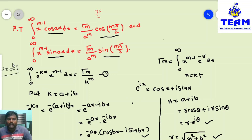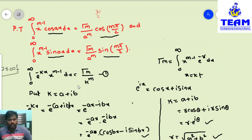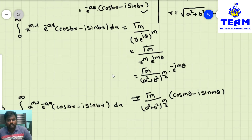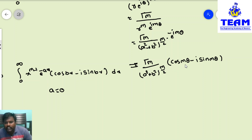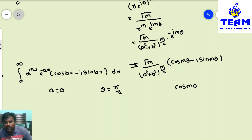To remove the exponential term, substitute a = 0, so e^(-ax) = e^0 = 1. To get mπ/2 instead of mθ, substitute θ = π/2. With these substitutions: cos(mθ) becomes cos(mπ/2), sin(mθ) becomes sin(mπ/2). Also, (a²+b²)^(m/2) with a=0 becomes (b²)^(m/2) = b^m.